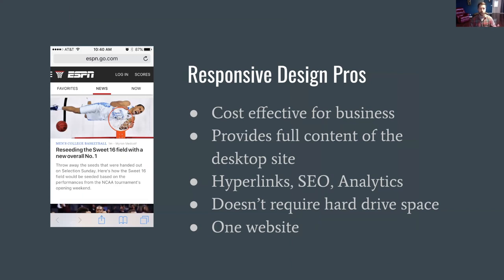There are a lot of pros to responsive design. It's cost-effective for businesses — converting a website to responsive just requires adding a few lines of code in the CSS called media queries, and it will move your content around based on different browser sizes. It also provides the full content of the desktop site. Since it's one website, all hyperlinks, SEO, and analytics still work. Keywords and alt text for images are all still in play, and it doesn't require hard drive space like an app would.